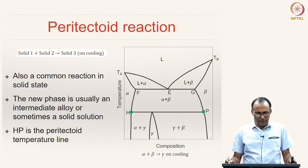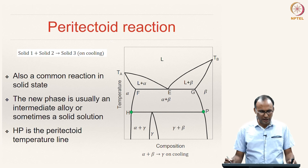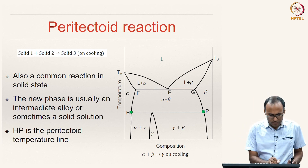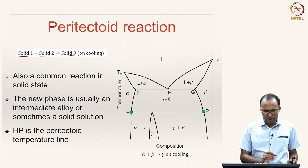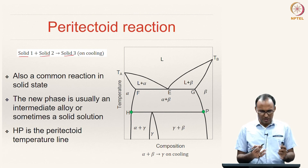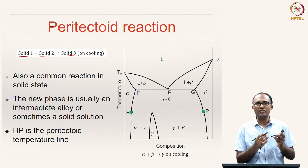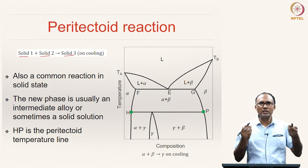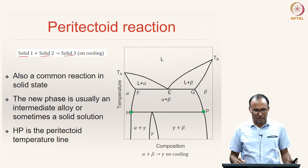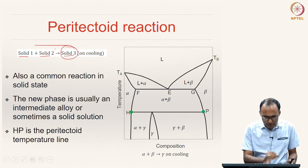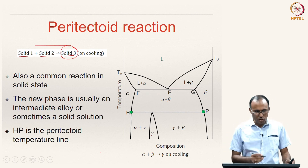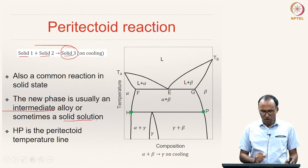The next reaction is the peritectoid reaction, in which two solids — solid 1 and solid 2 — upon cooling give solid 3. It is easy to remember: the peritectic reaction is liquid plus solid giving another solid; replace the liquid with a new solid, and you get peritectoid — solid 1 plus solid 2 giving a third solid upon cooling. The new phase formed is usually an intermediate alloy or sometimes a solid solution. Here, the line HP is the peritectoid temperature line, where alpha plus beta transforms to gamma — an intermediate phase.